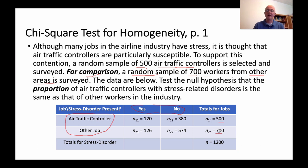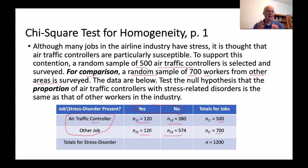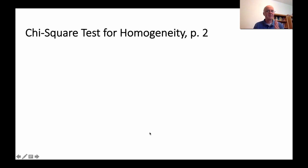We're going to test the null hypothesis that the proportion of air traffic controllers with stress-related disorders is the same as that of other workers in the industry. Here's the data: job category on the left — air traffic controller or not — and whether a stress disorder is present. We see 120 out of 500 air traffic controllers (24%) have stress disorders, and 126 out of 700 other workers (18%) do. Based on the sample data, the proportion of air traffic controllers with stress disorders is higher. The real question is: is it statistically significant evidence?